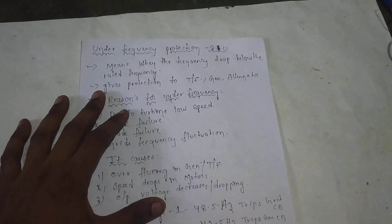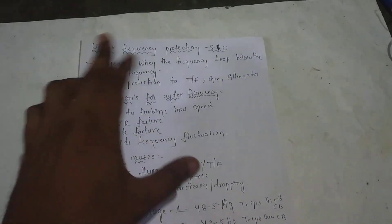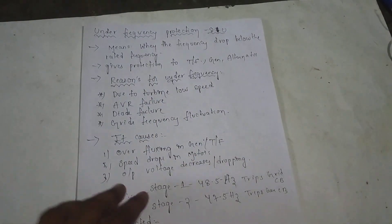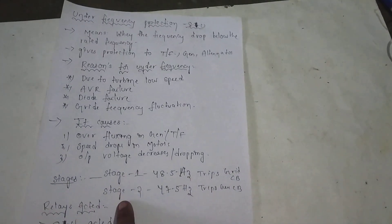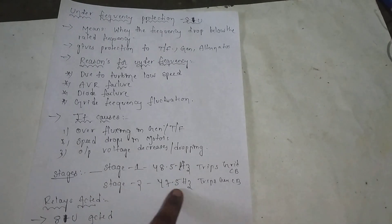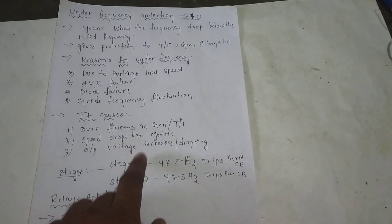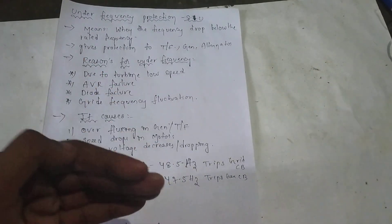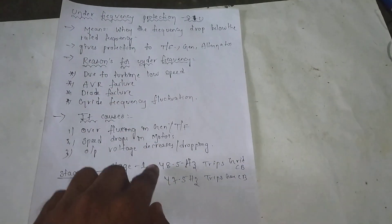This relay is set for Under Frequency Protection. The relay setting is configured in two stages: the first stage is set at 48.5Hz, and the second stage is set at 47.5Hz.